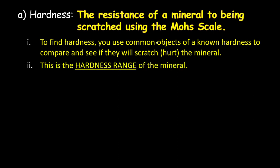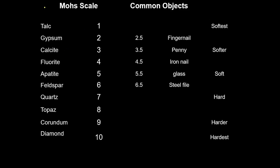We figure out a hardness range for the mineral, then jump to the reference tables to identify what that mineral would be. Here is the Mohs scale: talc has a hardness of 1 — very soft; gypsum has a hardness of 2; calcite, 3; all the way down to diamond, which has a hardness of 10. Diamond is the hardest substance on our planet.